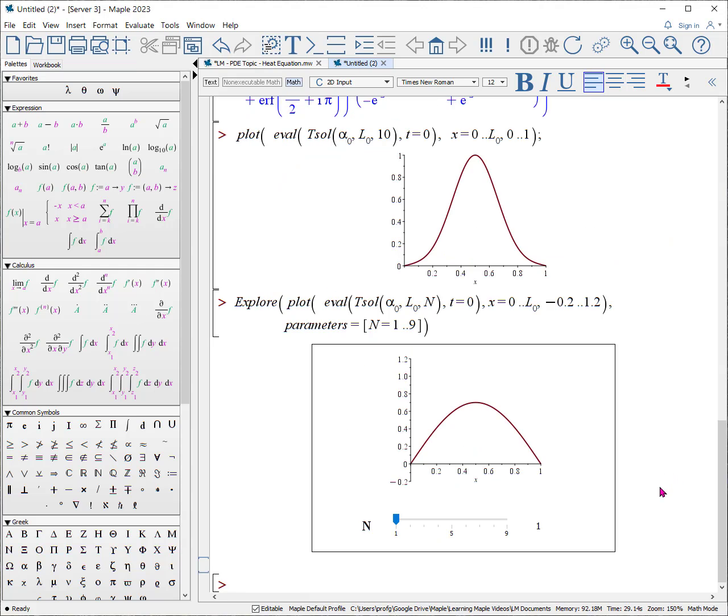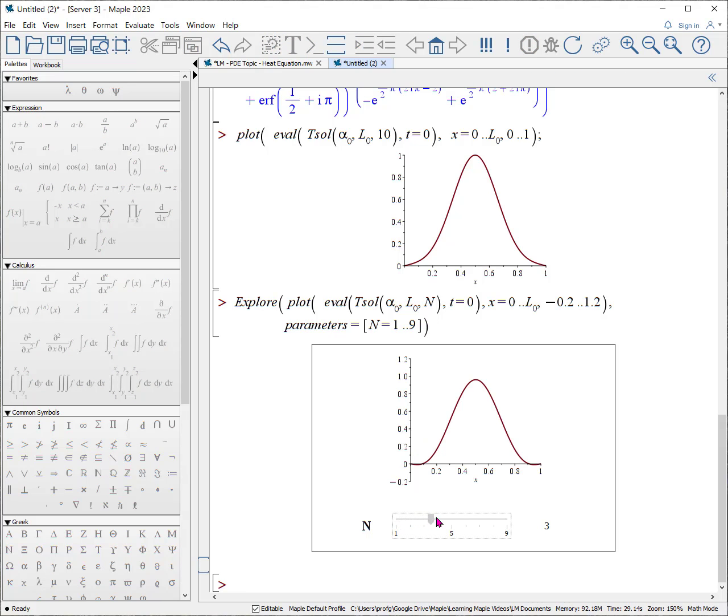This next expression is an explorer, and we're going to vary n the number of terms. As you add more n terms, you get a better and better approximation to our initial temperature difference.